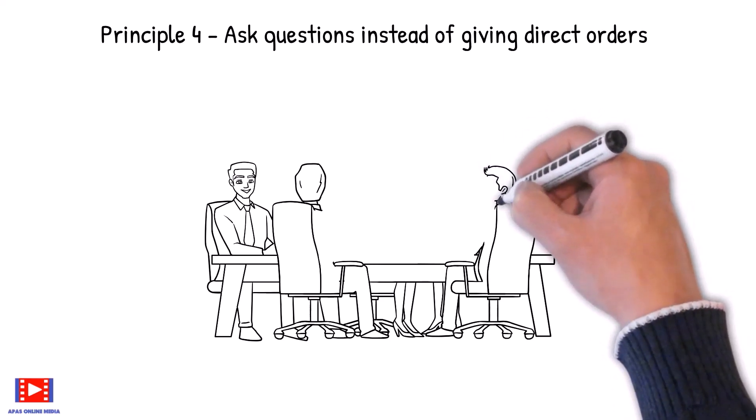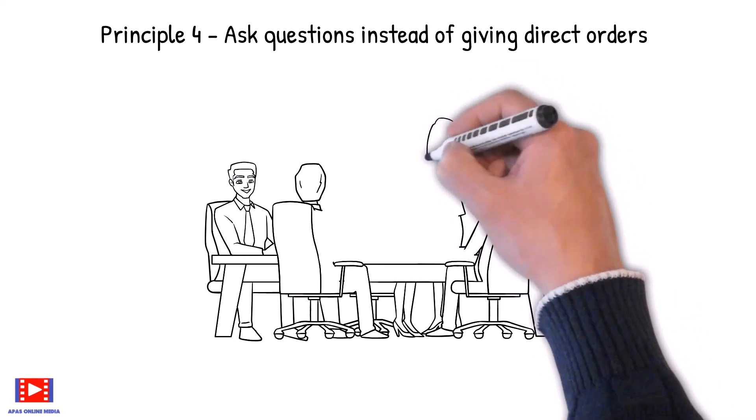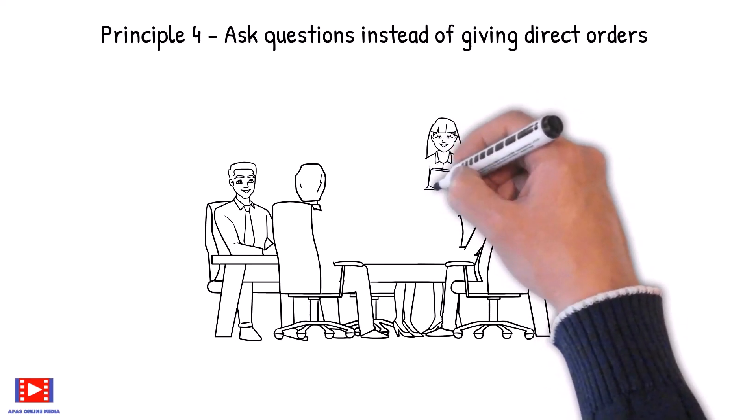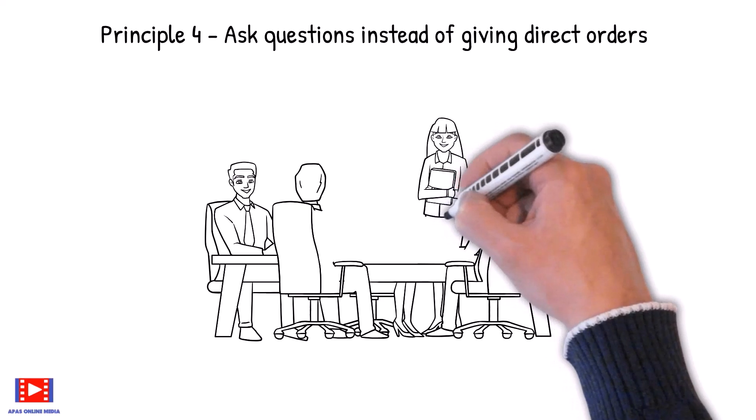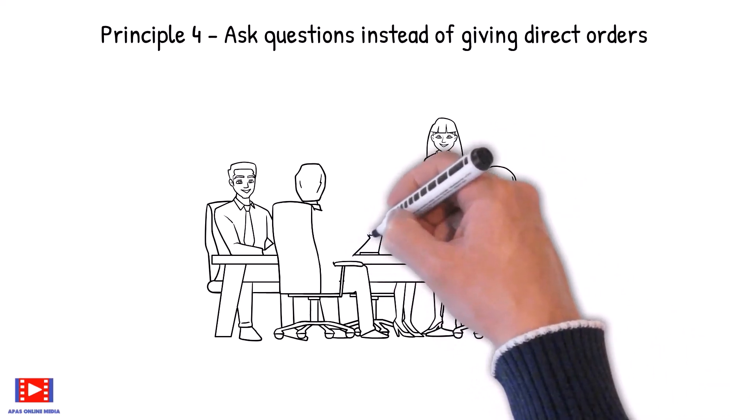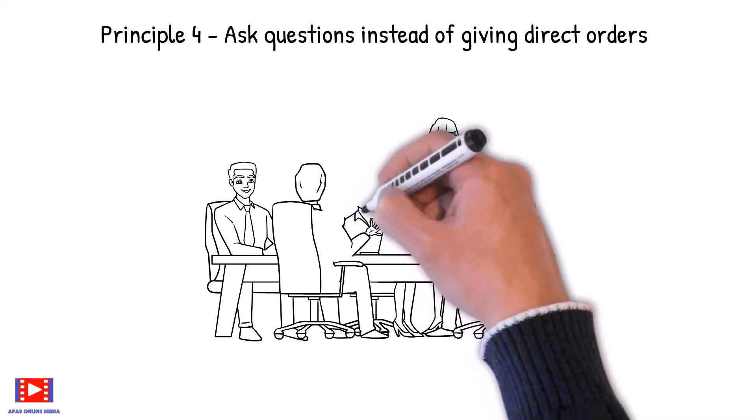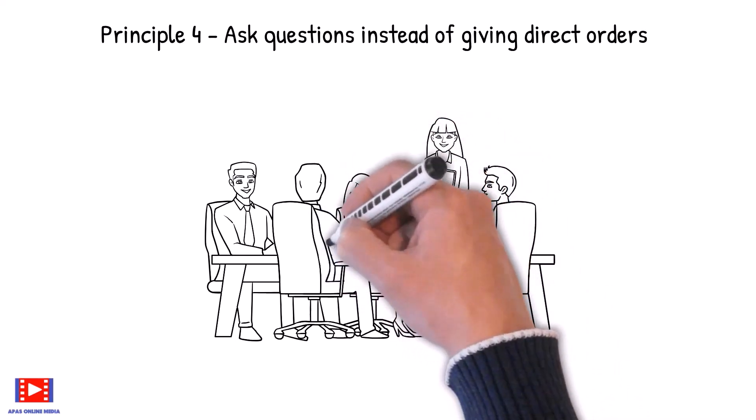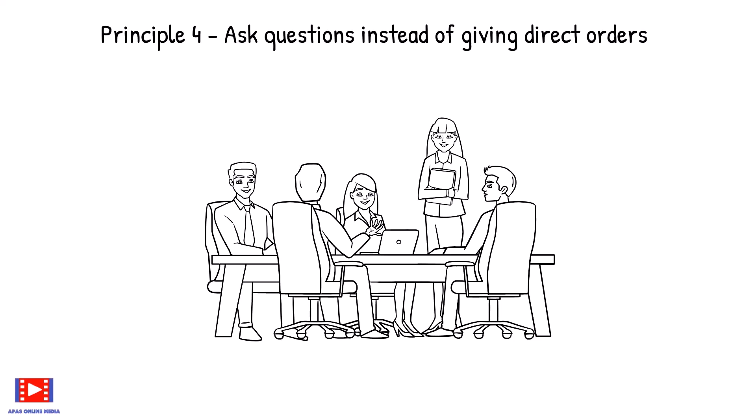Resentment caused by a brash order may last a long time, even if the order was given to correct an obviously bad situation. A leader, instead of giving direct orders, could make the team participate by asking: How would we have handled it differently? Asking questions not only makes an order more palatable, it often stimulates the creativity of the persons whom you ask. People are more likely to accept an order if they have had a part in the decision that caused the order to be issued.